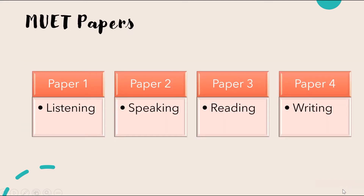So what are the papers you will be sitting for in the MUET test? The MUET test consists of four components: Paper 1 (Listening), Paper 2 (Speaking), Paper 3 (Reading), and Paper 4 (Writing). This is a language test that will test you on all four skills. Paper 2, the Speaking paper, is going to be held earlier before the other three papers. So the first paper you will sit for is the Speaking paper. You will need to refer to your examination slip to determine on which day you are asked to come for your speaking test.